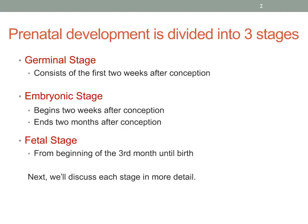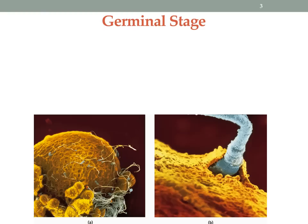The first stage is called the germinal stage and it consists of the first two weeks after conception. The second stage is the embryonic stage. It begins two weeks after conception and ends two months after conception. And then the fetal stage begins in the third month. So let's take some time and discuss each of these three stages in a little bit more detail.